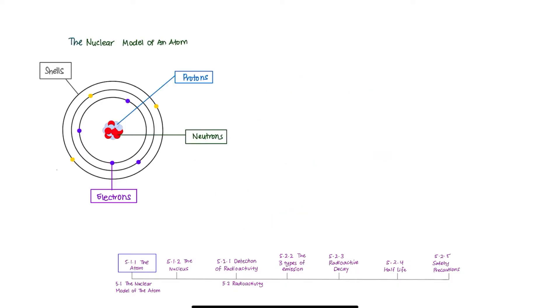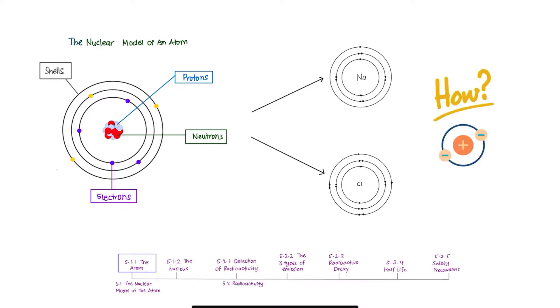In addition to understanding the structure of an atom, it is essential to know how atoms can form ions. Atoms can form positive ions by losing electrons or form a negative ion by gaining electrons.